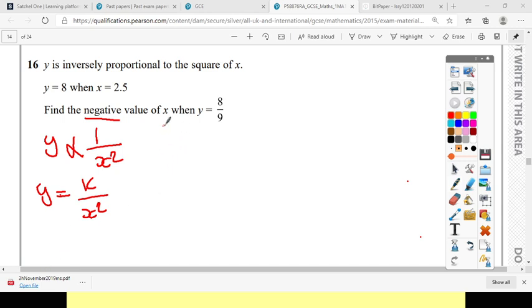Let's substitute the values in. I know that 8 is Y, which equals K over 2.5 squared. To solve that, I'm going to multiply both sides by 2.5 squared, which means K is actually 50.